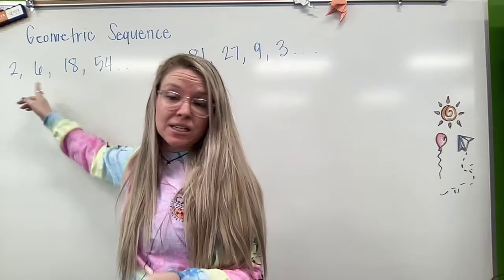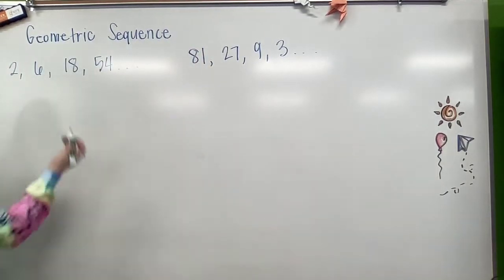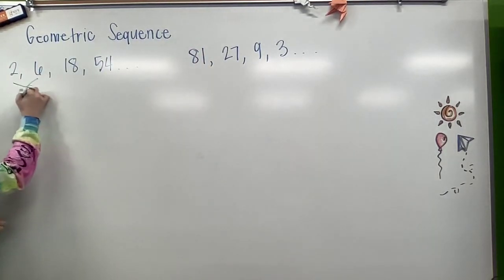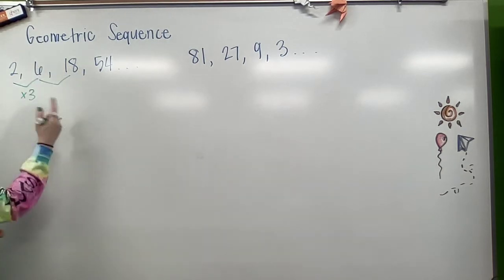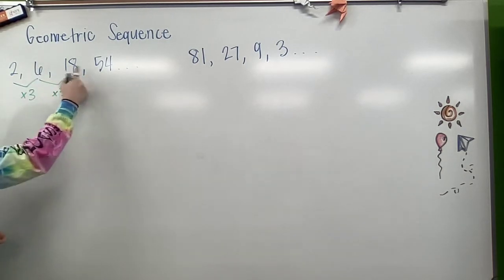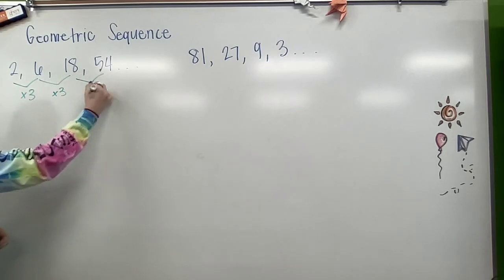So how else can I go from 2 to 6? Well, I could go ahead and multiply by 3. 2 times 3 is 6. Same here. 6 times 3 is 18. 18 times 3, 54.